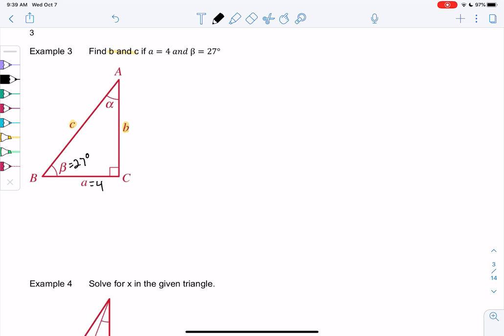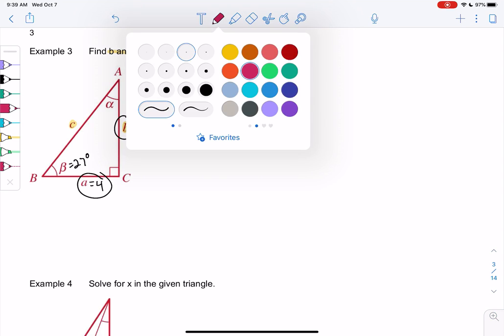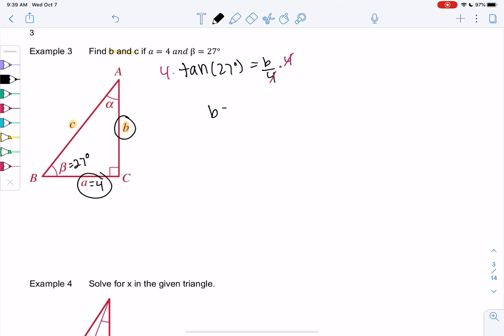I think I'll do B first. So I notice tangent of 27, tangent is opposite over adjacent, would be B over 4. We can multiply by 4. So B is 4 tangent 27 degrees. And so this is technically the exact answer. We'll go ahead and estimate it with a calculator since it's not on the unit circle.